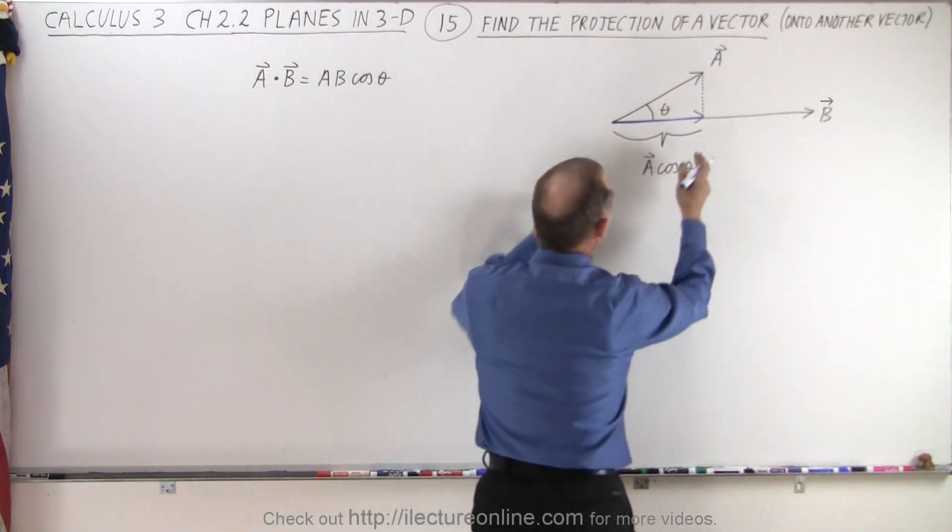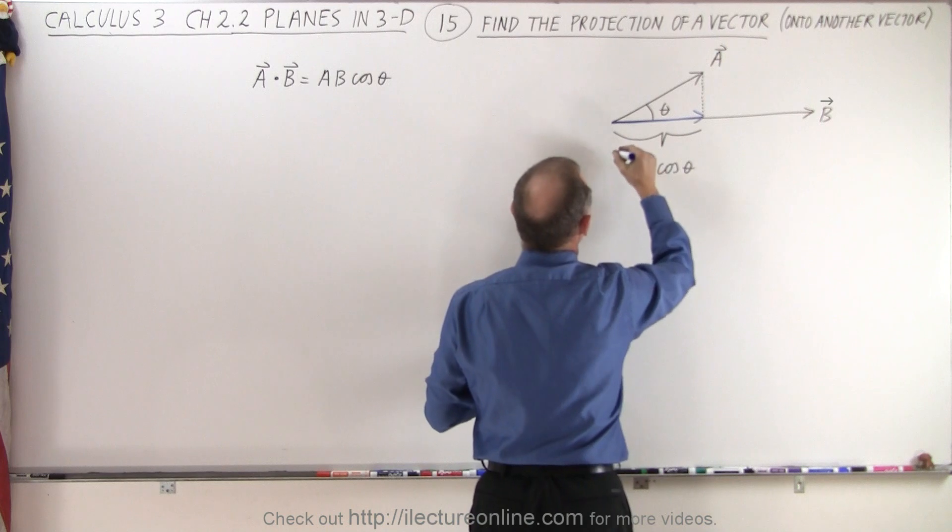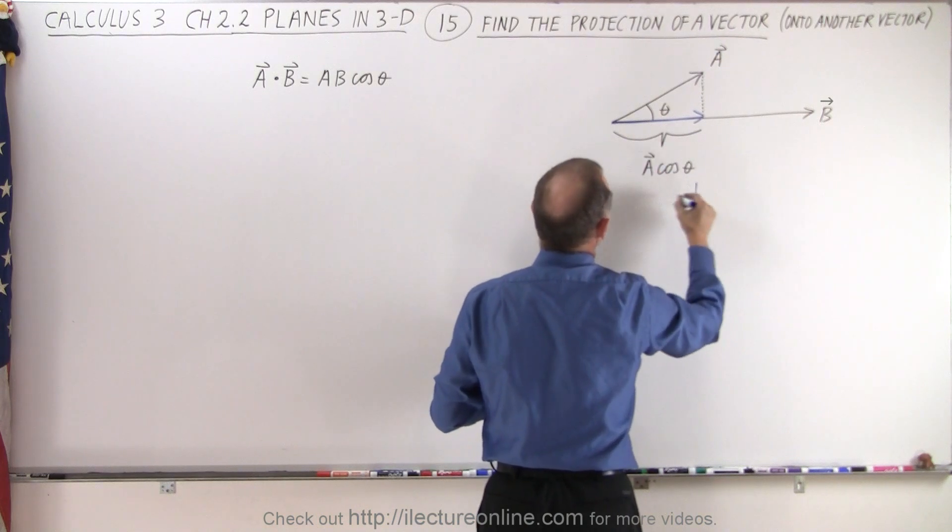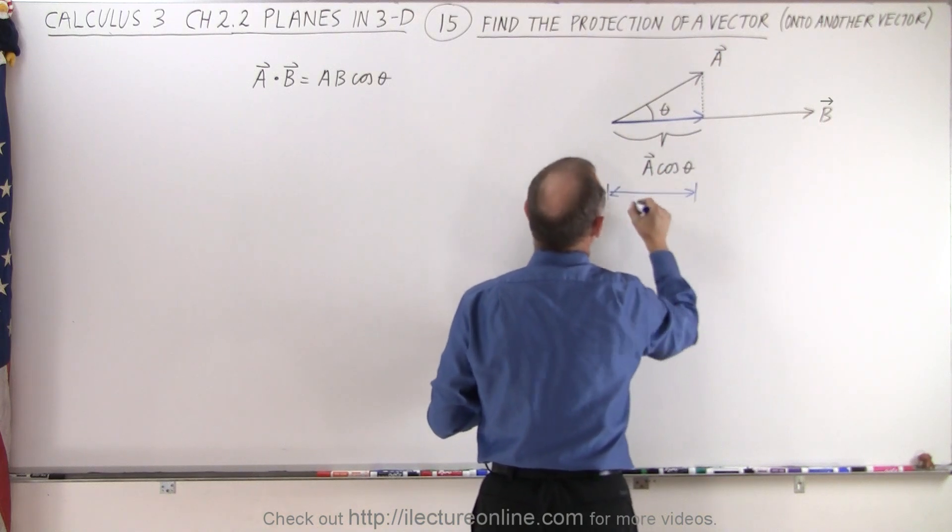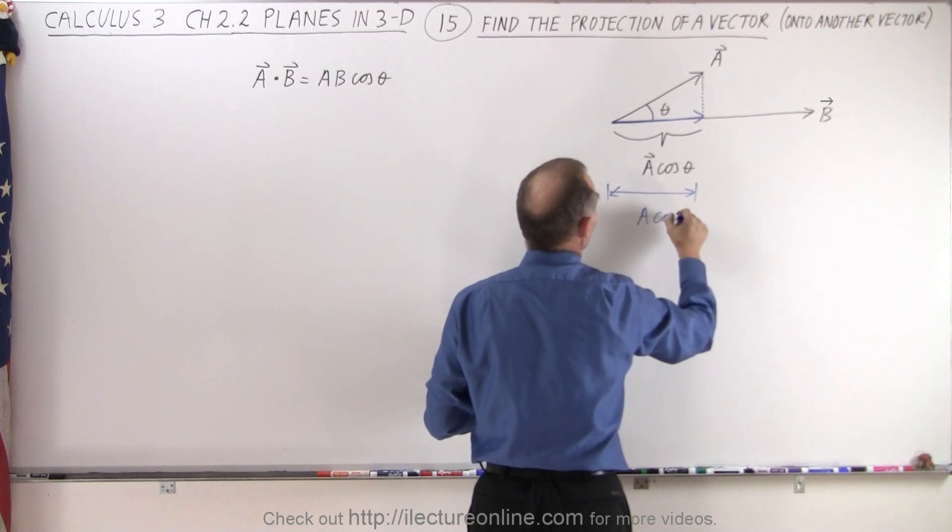And then if we want to know the magnitude of that, the length of that, this distance right here can simply be A times the cosine of theta.